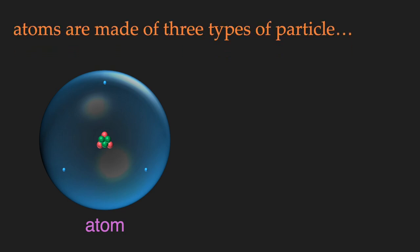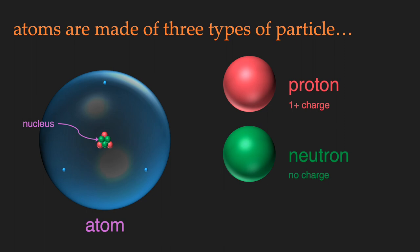Today, we know that atoms are made of three types of particle. There are protons and neutrons that make up the nucleus, and the nucleus is surrounded by electrons.